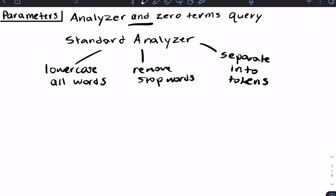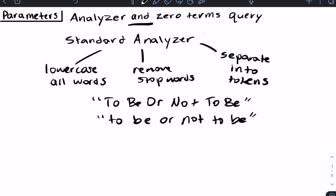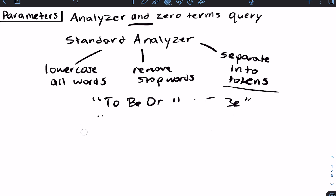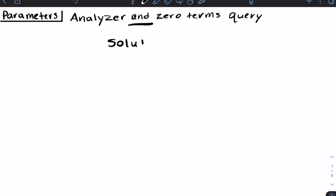This seems pretty harmless, but let's say we're looking for the popular phrase 'to be or not to be'. If it lowercases all the words, that's fine. But then if it removes stop words, it's going to get rid of all of these words. So what's the solution? How can we keep this from happening and still be able to get back results?